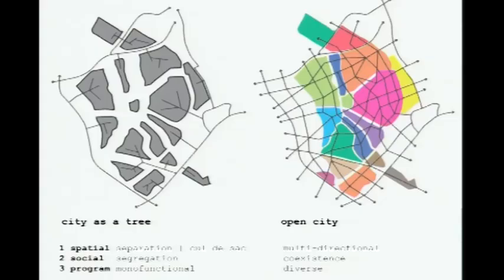I'd like to address two themes: one is the open city, where mobility and accessibility has an enormous impact, and the second is the theme of placemaking. Starting with open city — you see here two images: city as a tree and the open city. City as a tree means you have a lot of dead-end streets, there's no accessibility from one part to the other, there's a certain social segregation, and this can also be caused by really huge infrastructures that cut off different bits and pieces of the city.